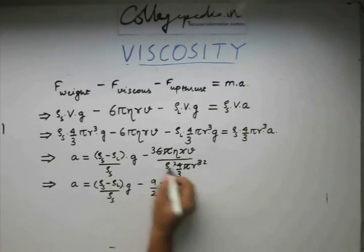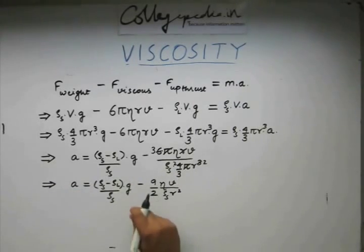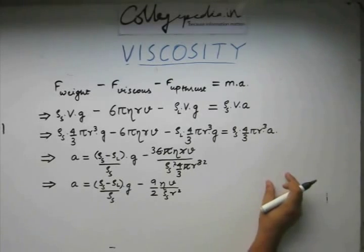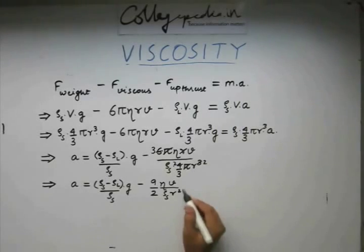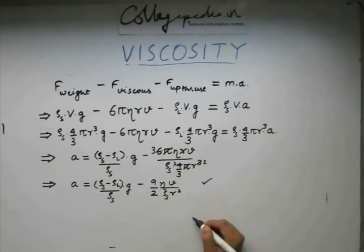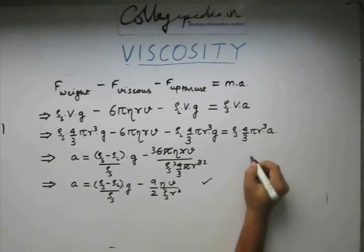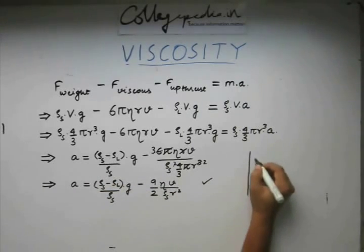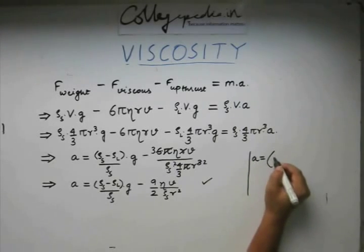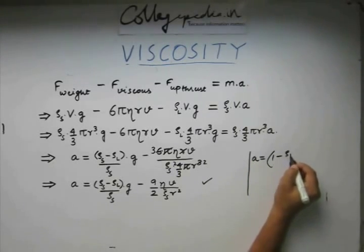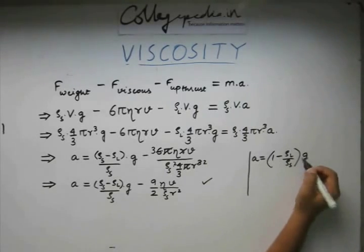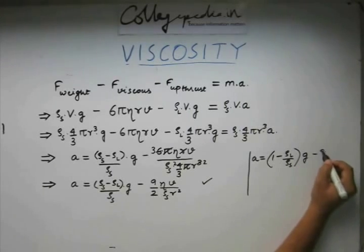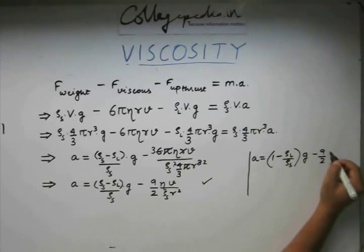This is the acceleration which is faced by that spherical object moving down that fluid. This solves the first part of the question. Let us write this down somewhere. If we rearrange it a bit more, we get (1 - ρl by ρs) times g minus 9 by 2 ηv by r²ρs.